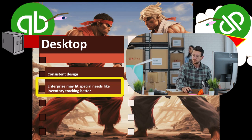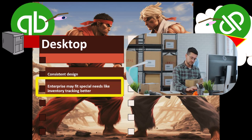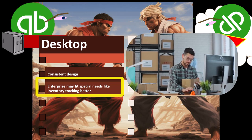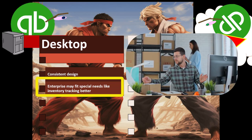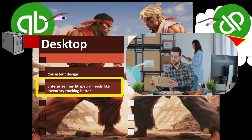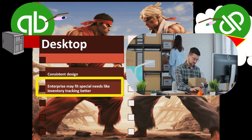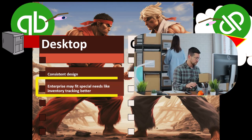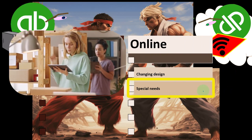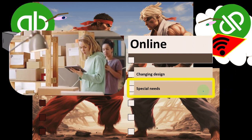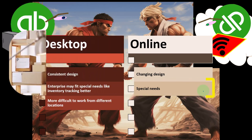Enterprise may fit special needs like inventory tracking better. Some things the desktop version does better — for example, advanced inventory tracking needs. The online version handles general inventory, and you could possibly get advanced inventory needs met, but the desktop Enterprise version still likely has superiority for advanced inventory tracking.